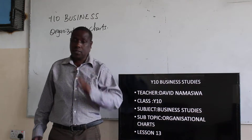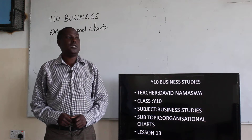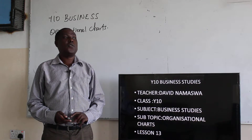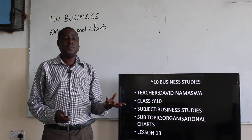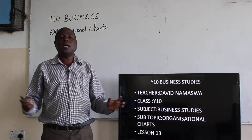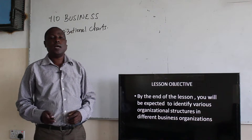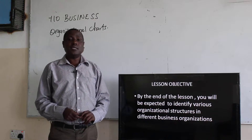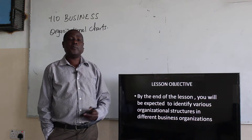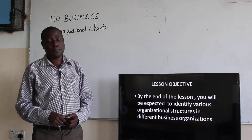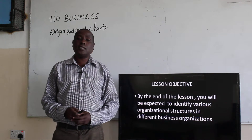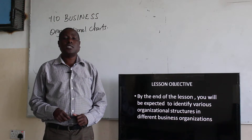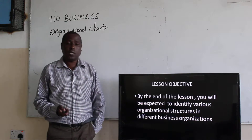Now, remember we were saying in our previous lesson that in an organization, there must be a flow of information from one level of leadership to another. So this is organized in what we call an organizational chart. This is our objective for the lesson: by the end of the lesson, you will be expected to identify various organizational structures in different business organizations.